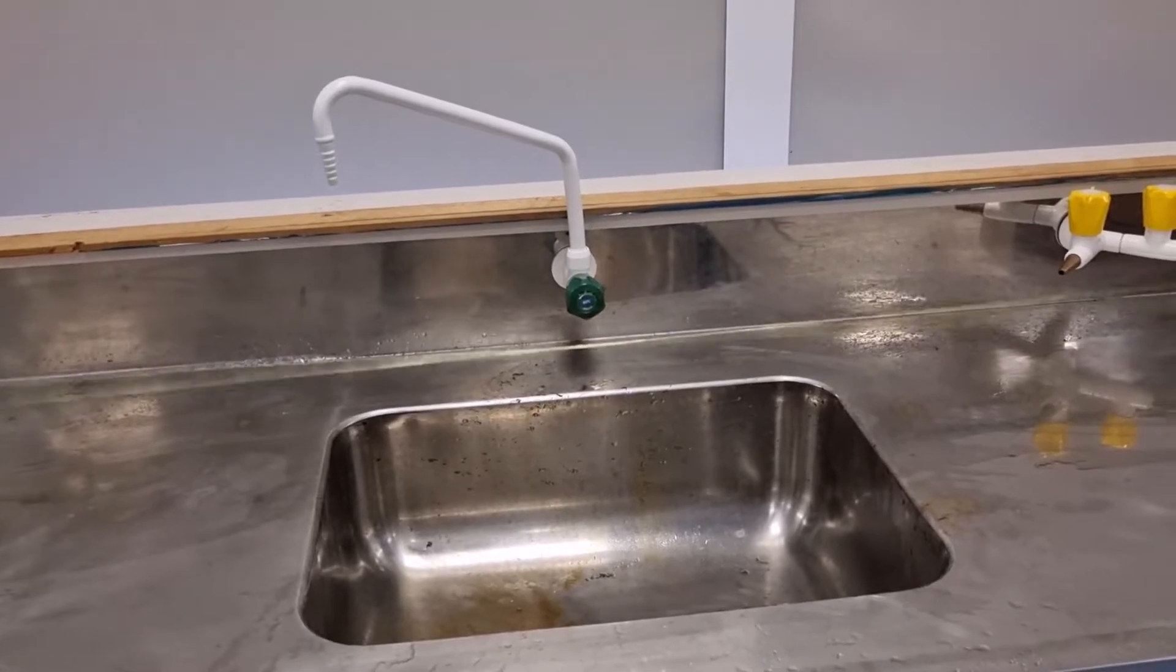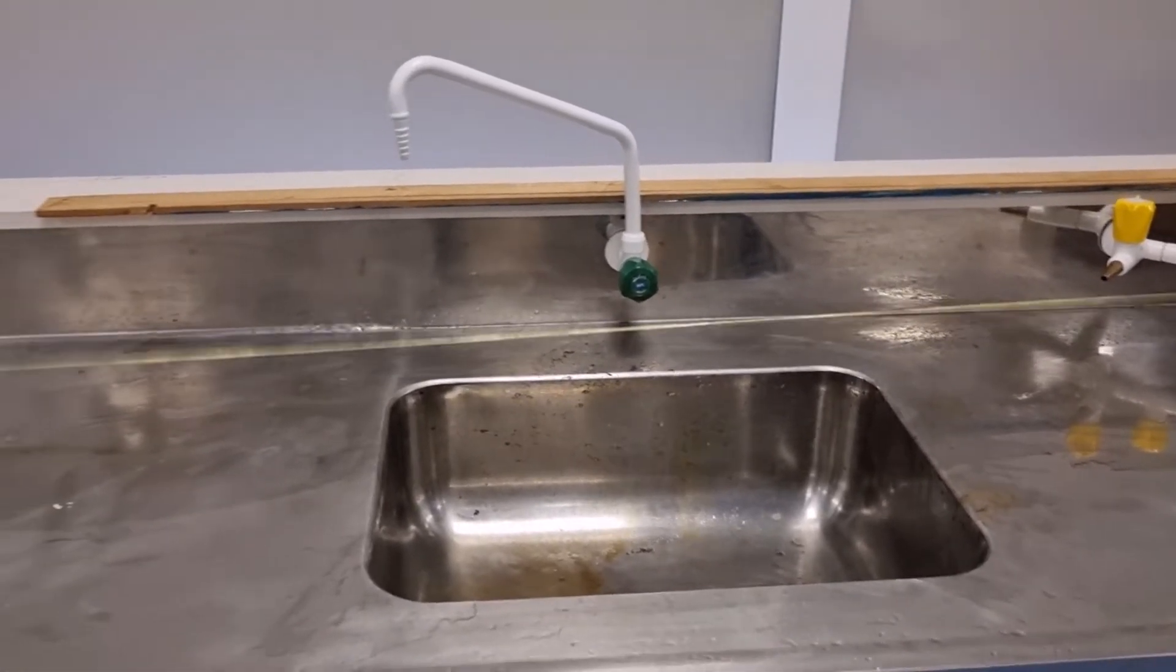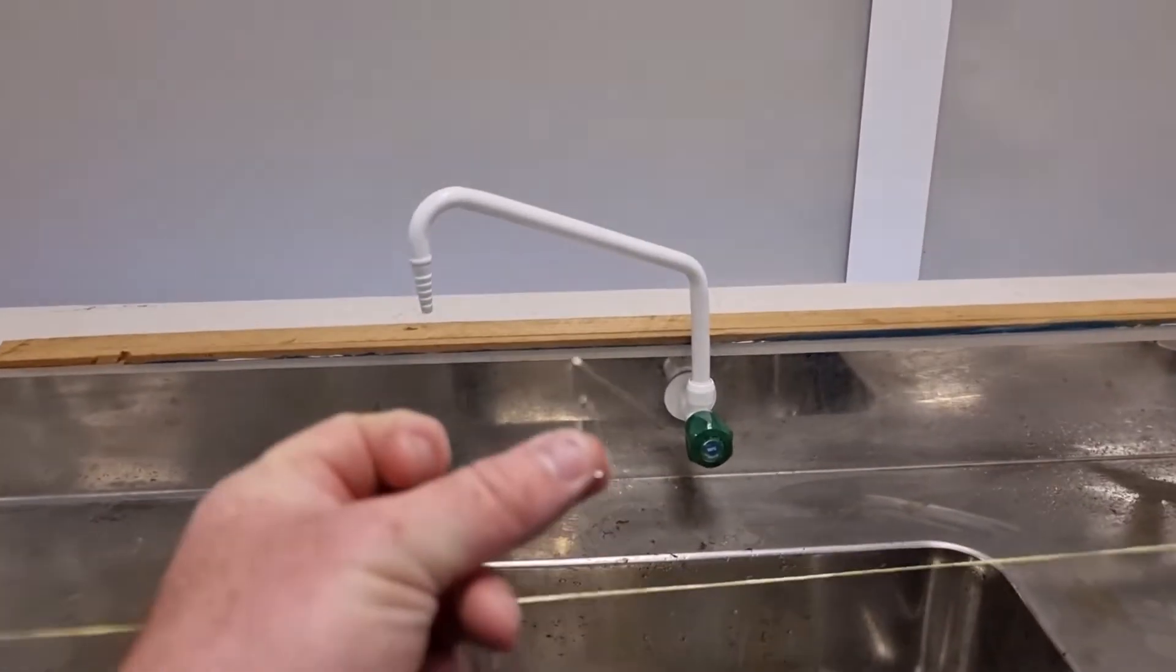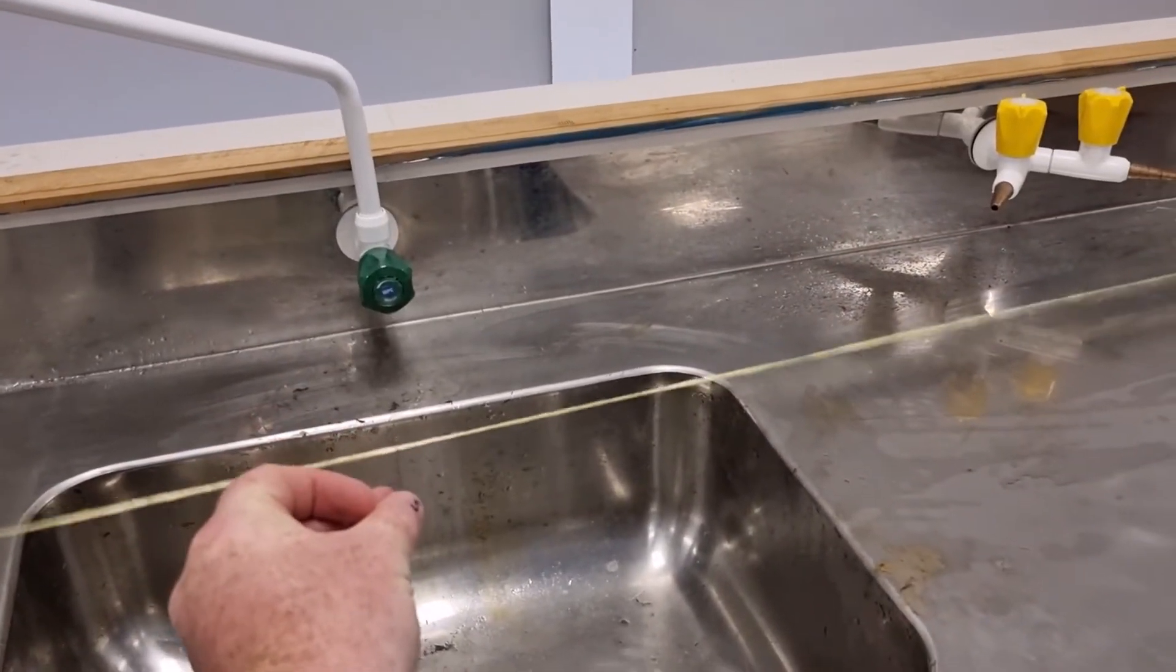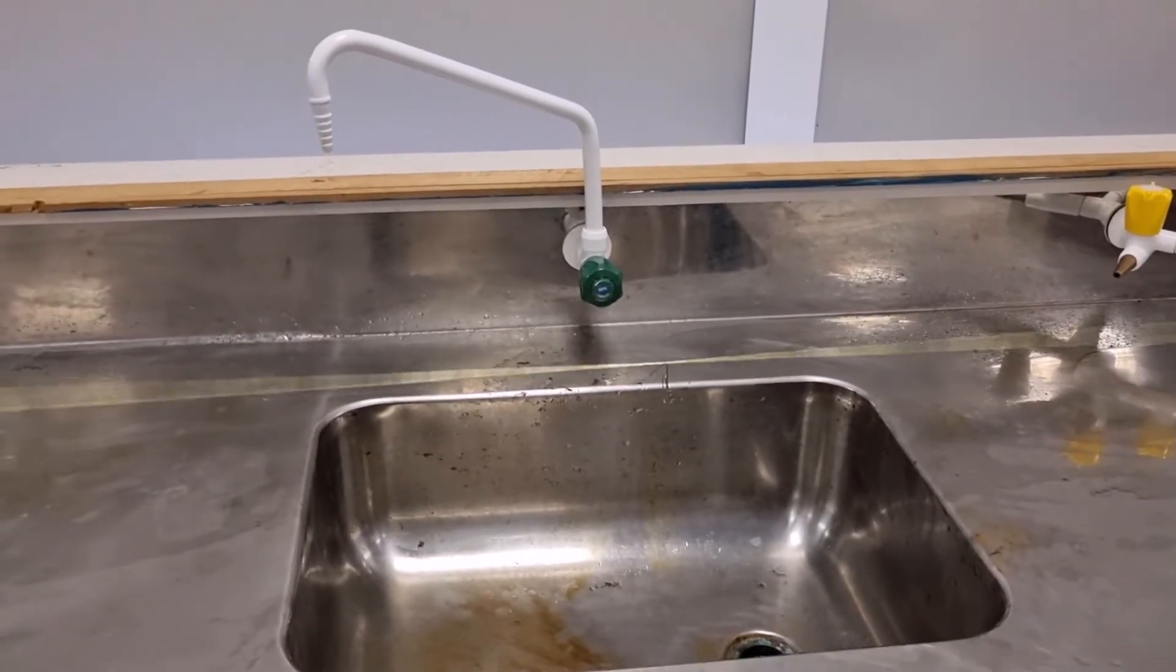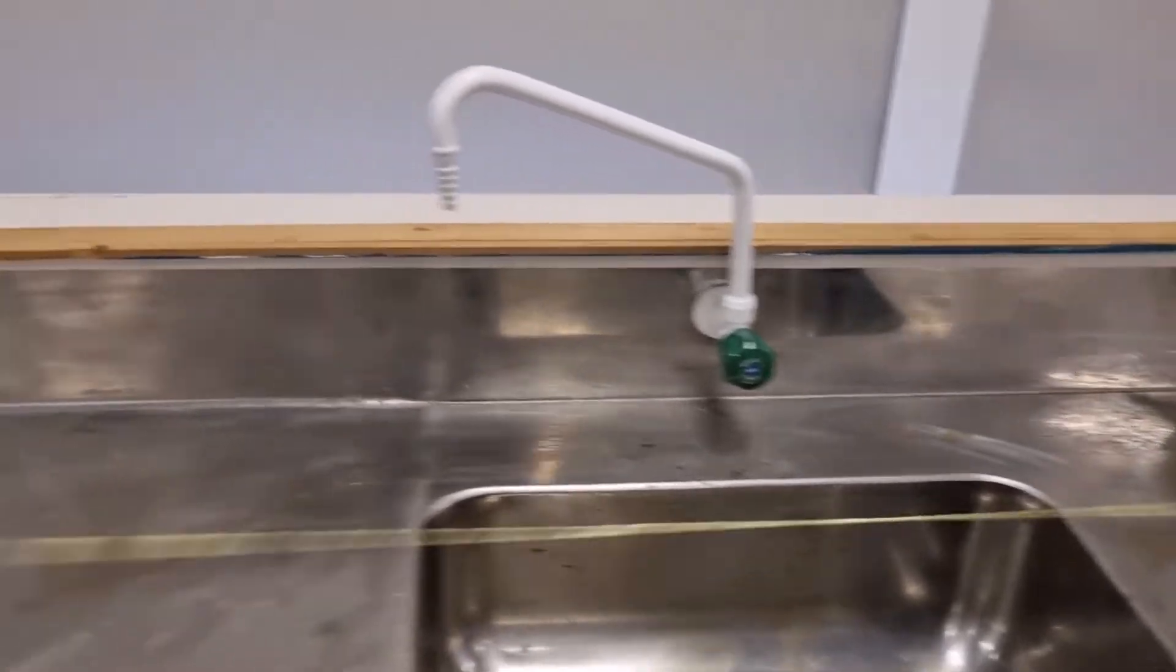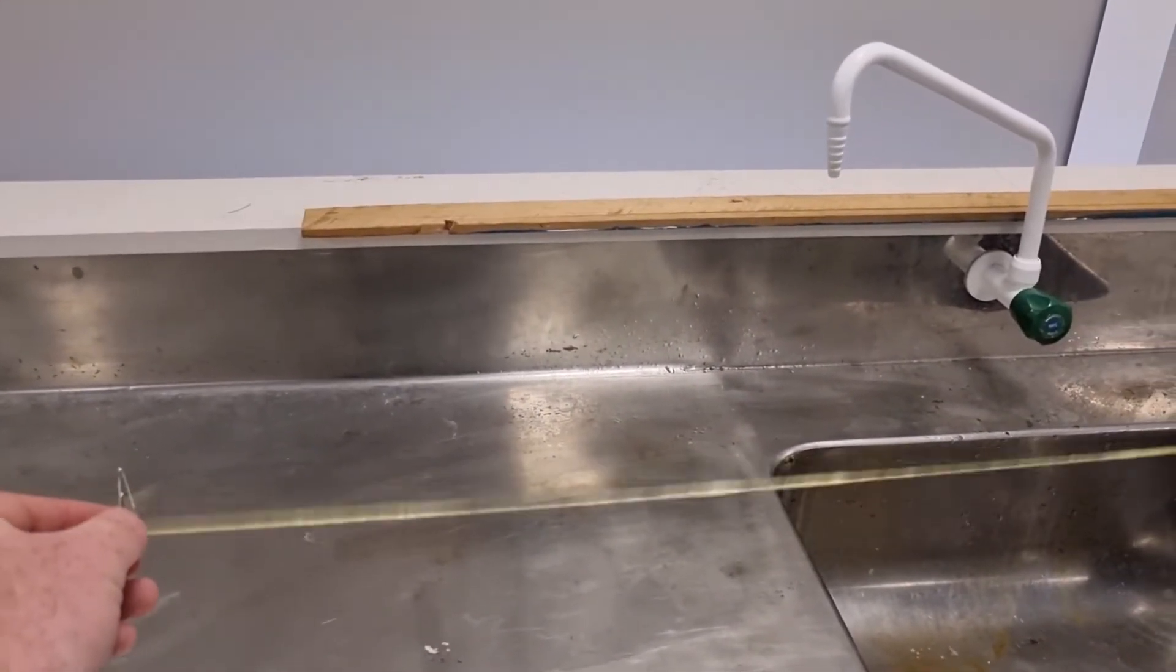And so another nice little demonstration to do, just to reinforce the idea of energy and amplitude at the nodes and anti-nodes, is to take a little paper clip that's open and you can drop it on the node and it'll just hang there quite happily. But if you try to do that on one of the anti-nodes, it just jumps off straight away.